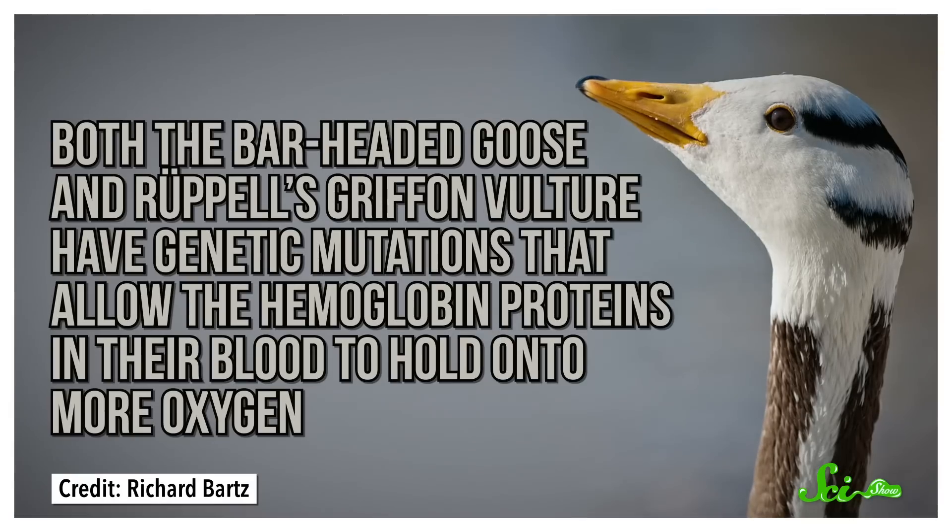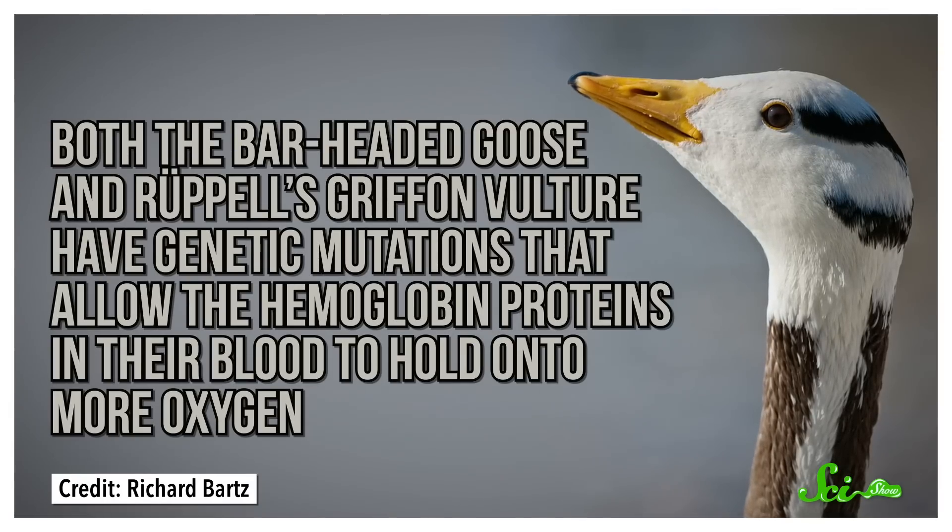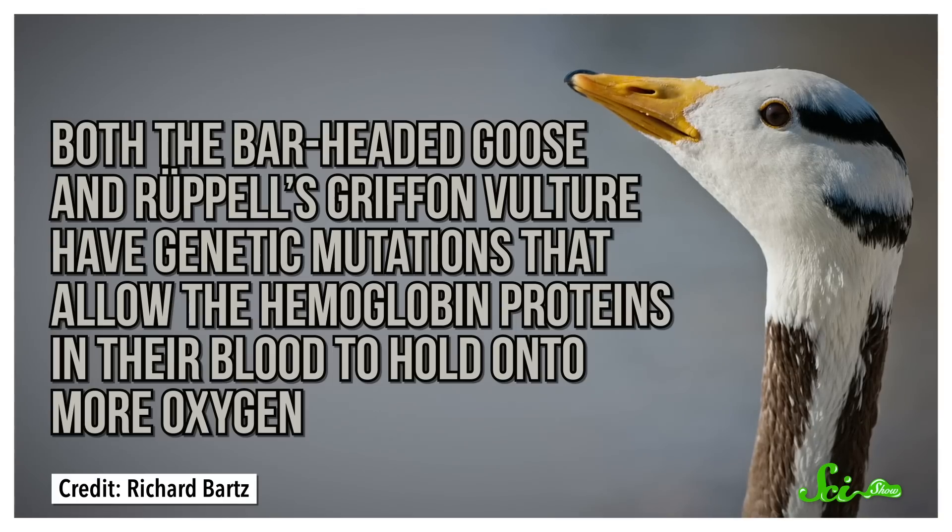We don't fully understand how these birds do it, but both the bar-headed goose and Ruppell's griffin vulture have genetic mutations that allow the hemoglobin protein in their blood to hold on to more oxygen. Researchers have also found that when they're low on oxygen, bar-headed geese can move more air in and out of their lungs than any other species we've ever studied.